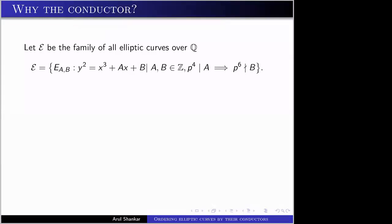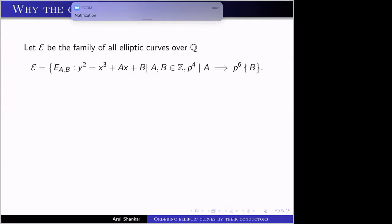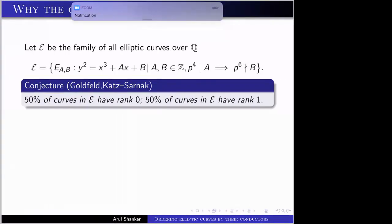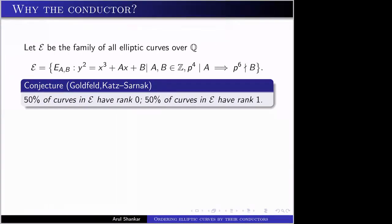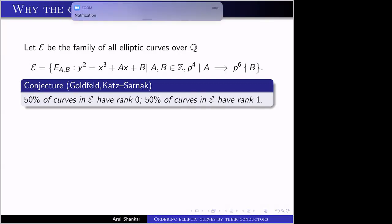We have to assume that the cubic polynomial x³ + Ax + B has distinct roots. Also, to ensure all different elliptic curves are distinct, we assume that if p⁴ divides A, then p⁶ does not divide B for every prime p. Once we have this family of elliptic curves, one of the foundational conjectures in this field is the conjecture of Goldfeld and Katz-Sarnak, which is that 50% of elliptic curves have rank zero and 50% have rank one.